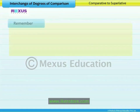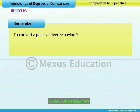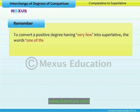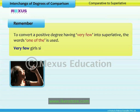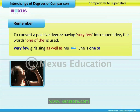Remember, to convert a positive degree having 'very few' into superlative, the words 'one of the' is used. For example: Very few girls sing as well as her becomes She is one of the best singers.